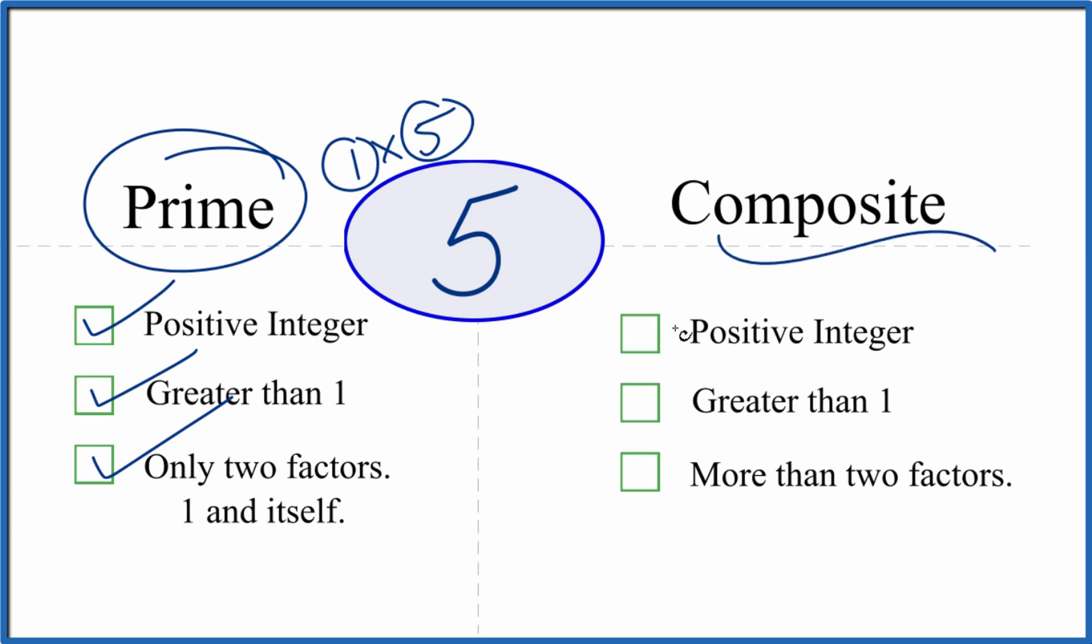But is it a composite number? Because it's a positive integer, it's greater than 1. But are there more than 2 factors that go into 5 evenly? And we just said there are only 2. So 5 is not a composite number. It's a prime number.